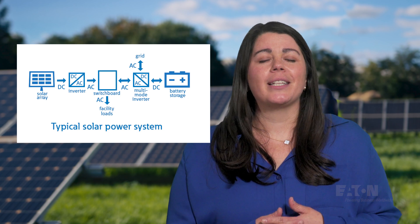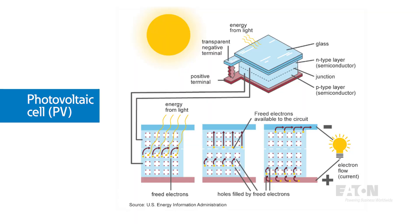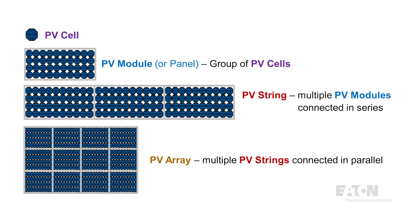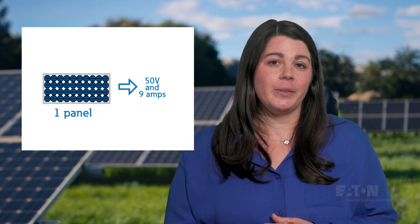Why do energy transition applications use DC? Because the generating and storage methods are only possible with DC. Even though this power is almost always converted to AC for distribution and consumption, the source of the power is DC. Let's use solar as an example. A photovoltaic cell is an electronic device that converts light into DC electricity. A single cell doesn't produce much energy, but can be wired into groups called modules or panels. Typically, one panel will generate less than 50 volts and 9 amps.